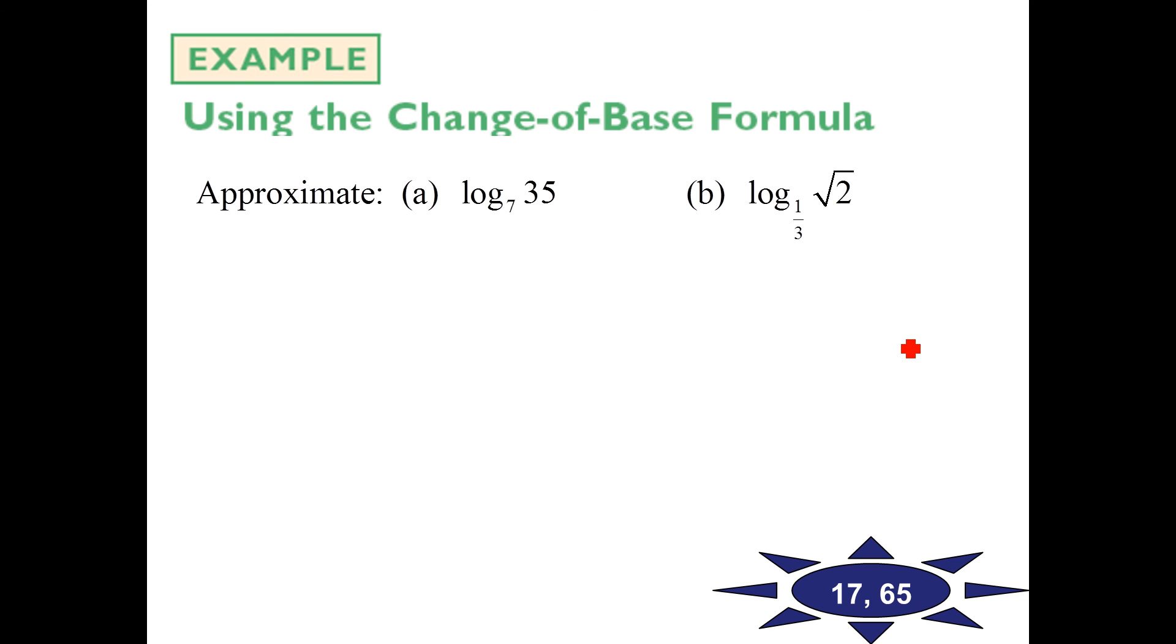So using change of base how would we set it up? This is going to be log 35 over log 7. Or you could write natural log of root 2 over natural log of one third. And from using our formulas you could if you wanted to write one half natural log of 2 for your numerator there. Because 2 to the one half you could bring that one half out front. This would still be one third in the denominator. 17 and 65 are yours to try.